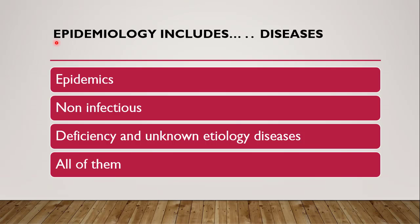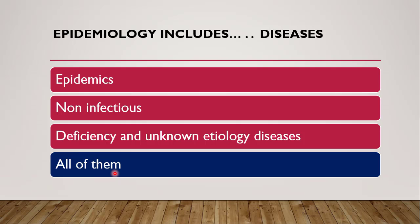The next question: Epidemiology includes which types of diseases — epidemics, non-infectious diseases, deficiency and unknown etiology diseases, or all of them? The correct answer is all of them. Earlier, Epidemiology referred only to epidemic diseases like cholera, plague, and influenza, but presently it also includes non-infectious diseases, deficiency diseases, and diseases of unknown etiology.